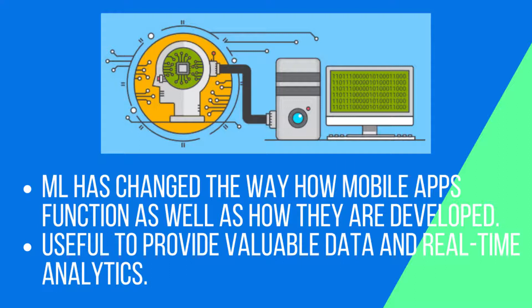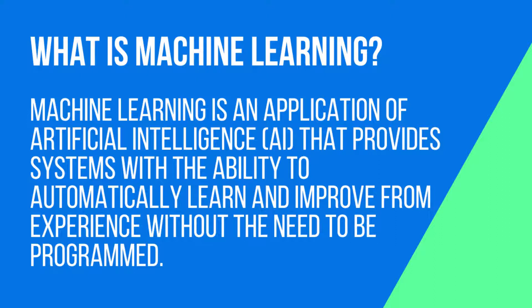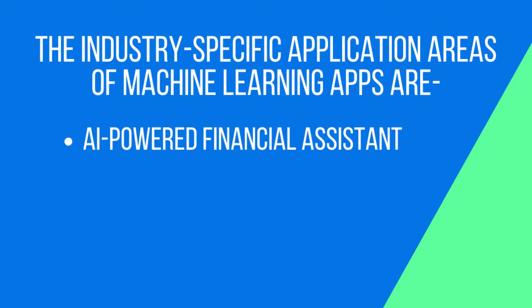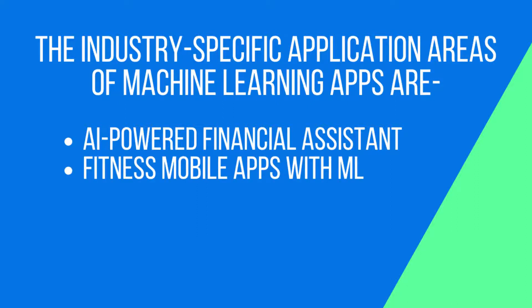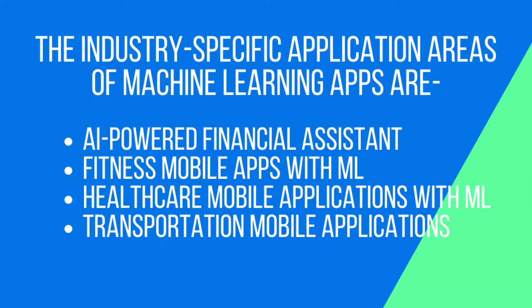Machine learning has proved to be very useful to provide valuable data and real-time analytics for mobile app development projects. The investments in ML are set to reach $58 billion by 2021. Machine learning is an application of artificial intelligence that provides systems with the ability to automatically learn and improve from experience without the need to be programmed. It can be used to develop computer programs that access data and use it to learn for themselves. Industry-specific application areas include AI-powered financial assistance, fitness mobile apps, healthcare mobile applications, transportation mobile applications, and e-commerce.